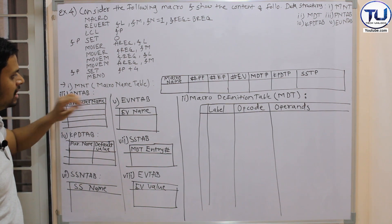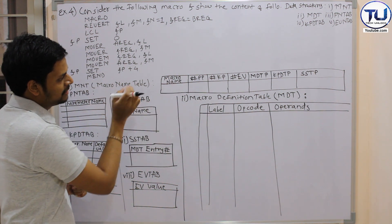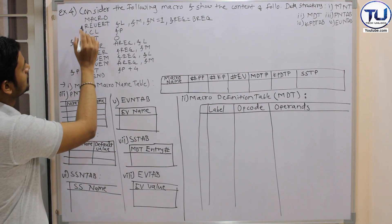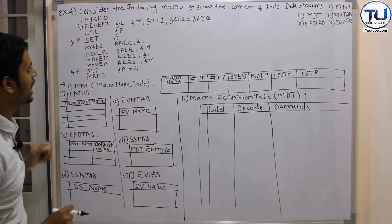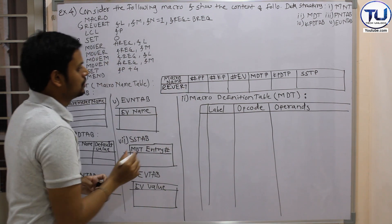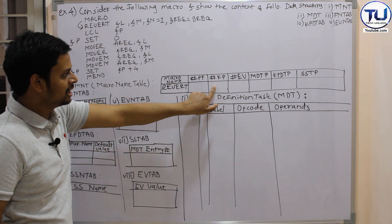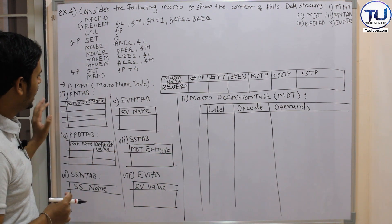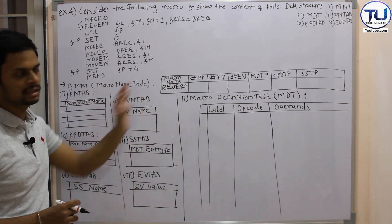The first table is the MNT table — macro name table. In the macro name table, the first parameter is the macro name. After the MACRO keyword there is the word 'REVERT', which is nothing but the macro name. After the macro name we have to write the positional parameter count, keyword parameter count, and expansion variable count. Let's write the other tables first, and with the help of those we will fill the macro name table correctly.